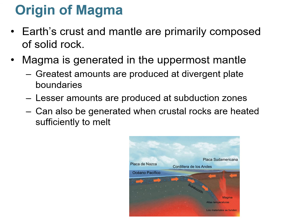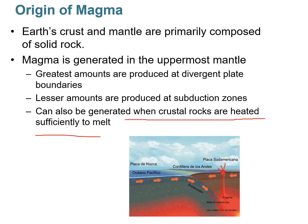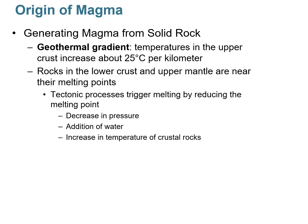So where does magma come from? Its origin is in the upper mantle. The greatest amounts of magma are produced at divergent plate boundaries, which we'll discuss in the plate tectonics lecture. Another environment where magmas are generated is at subduction zones. As a subducting plate goes down, it lowers the melting temperature of the asthenospheric mantle, generating melts that rise and erupt at the Earth's surface. Melts can also be generated when crustal rocks collide, raising heat and producing crustal melts.